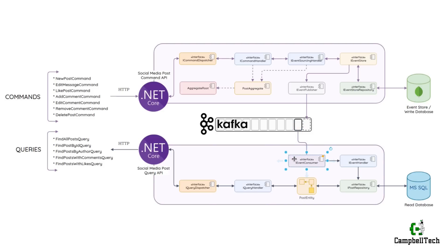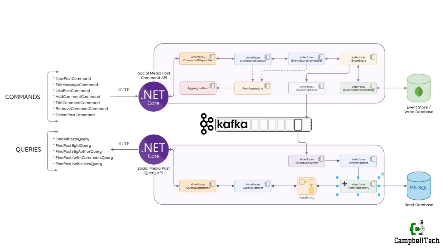On the query side, there will be an event consumer that subscribes to the social media post events topic. And once a new instance of the post created event is published to Kafka, it'll consume it from Kafka and then pass it to the event handler. The event handler will then be responsible for handling the post created event, whereby it will construct a new instance of post entity and persist it to the read database via the iPostRepository interface.